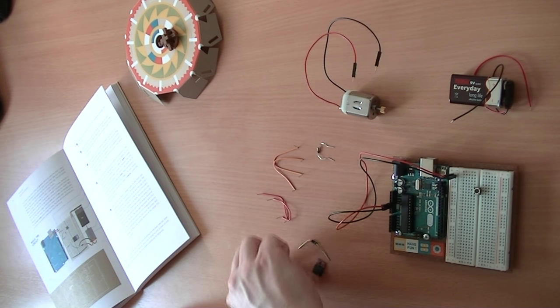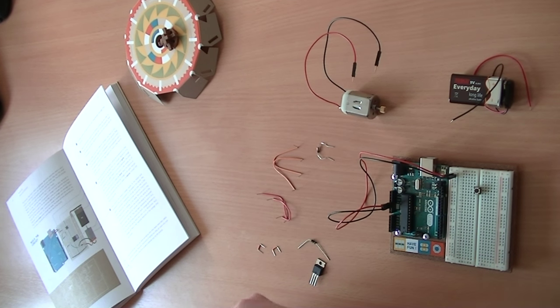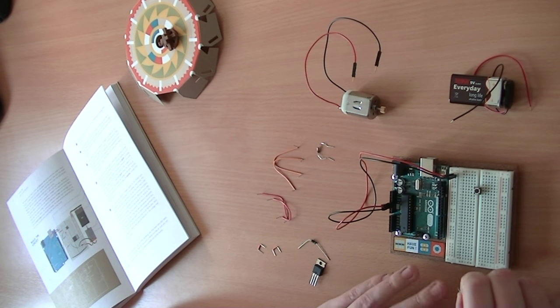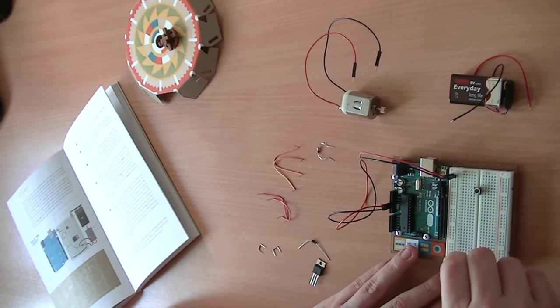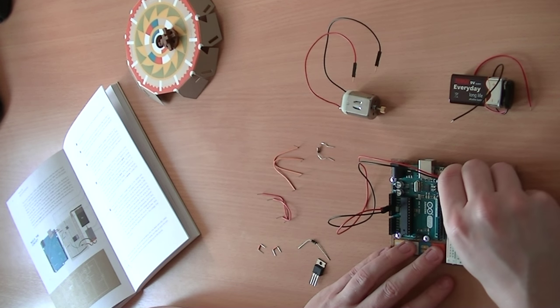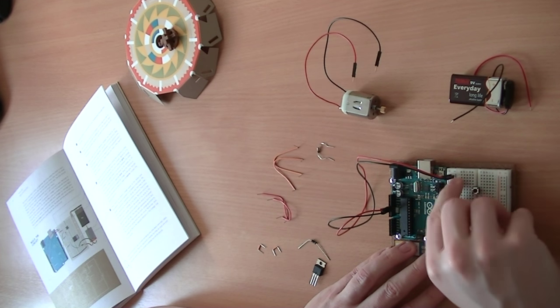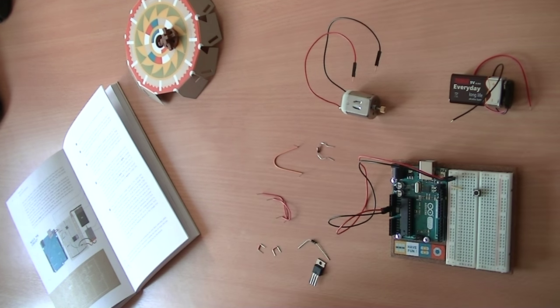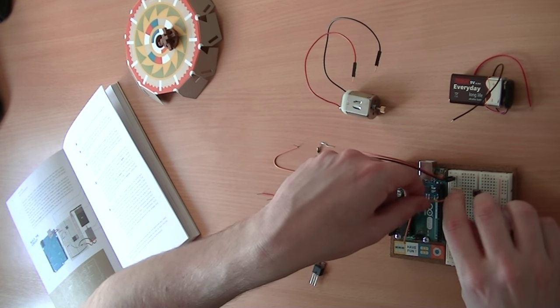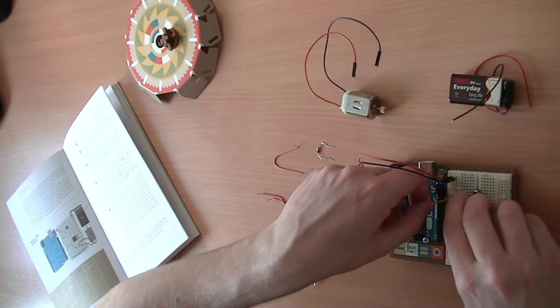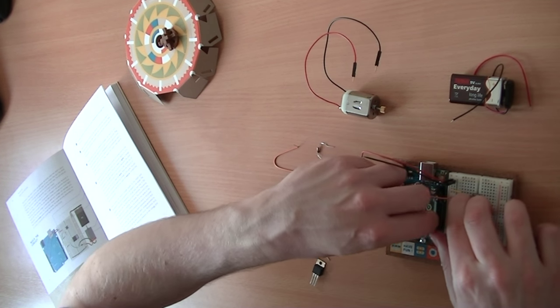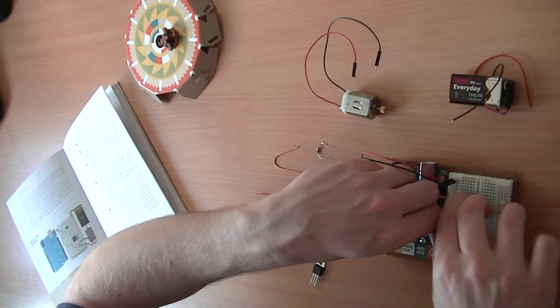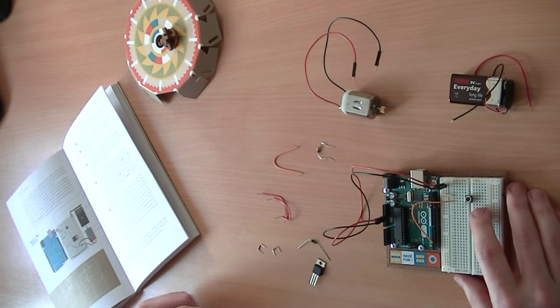And we'll connect that from the power at the top and then to digital input 2 as well. So let's do power, number 5 there at the top, and then we'll get a cable to connect that to digital input 2. So we'll go from number 7 back round to digital input 2, like so. So that's the button.